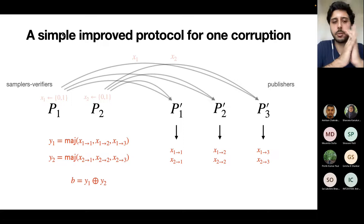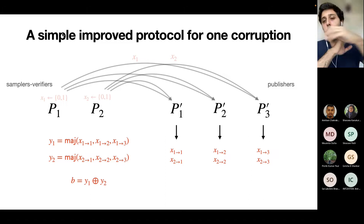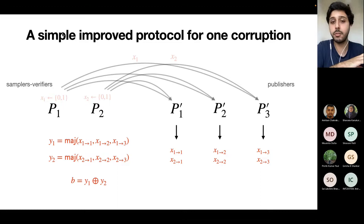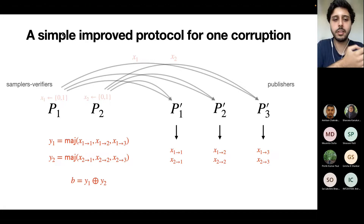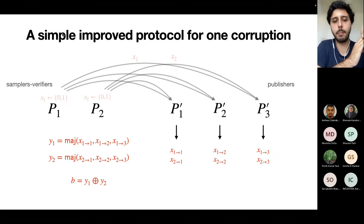Why does this work with just one corruption? If you corrupt P2, you must send some values to the three publishers. You can send different values, but with three publishers and only two possible values, you must send the same value to at least two publishers — committing to that value via majority. You chose that without knowing X1 because all publishers are honest. So corrupting a sampler/verifier doesn't help.